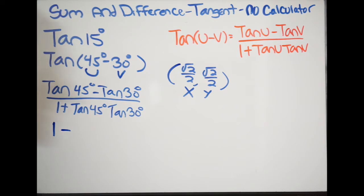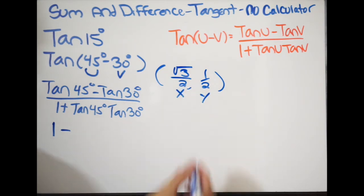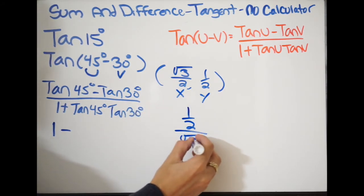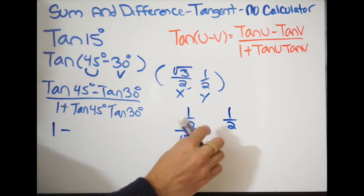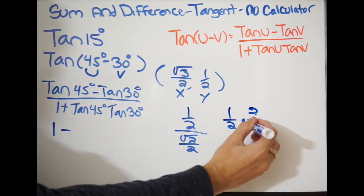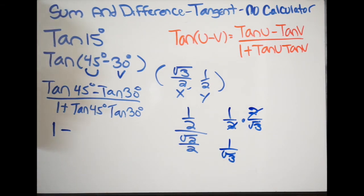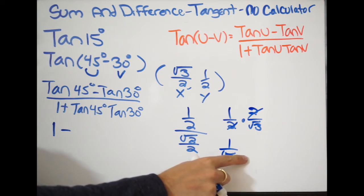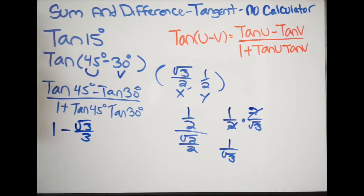Now, at 30 degrees the x and y values from the unit circle are square root of 3 over 2 and one half. Tangent is y over x, so we have one half over square root of 3 over 2. Using keep-change-flip when dividing fractions, we get one half times 2 over square root of 3. The 2s cancel, giving 1 over square root of 3. Rationalizing by multiplying numerator and denominator by square root of 3 gives us square root of 3 over 3. That is tangent of 30 degrees.